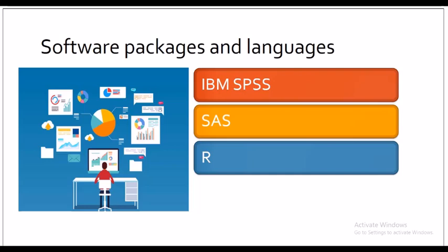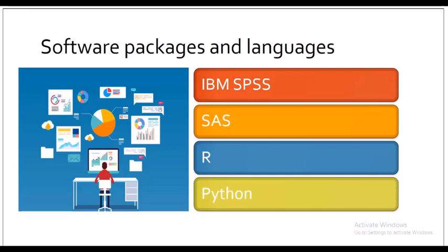R is very popular nowadays and statisticians are very keen on using it. There is also Python, which is also very popular and reliable. Python is an interpreted, high-level, general-purpose programming language. Python's design philosophy emphasizes code readability with its notable use of significant white space.